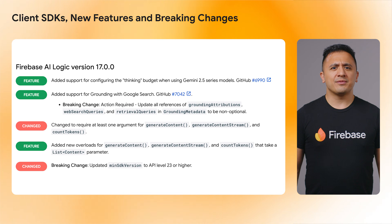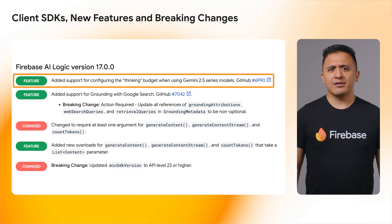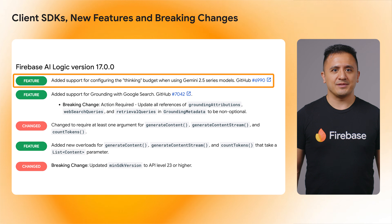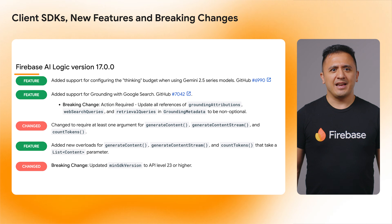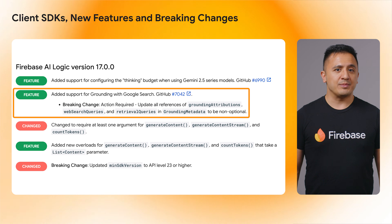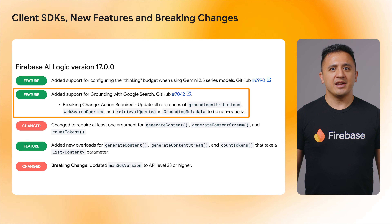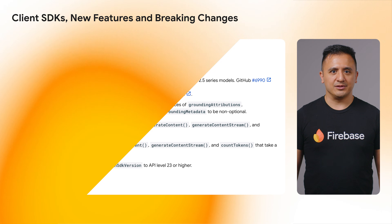With regards to Firebase AI Logic, support for configuring the thinking budget when using Gemini 2.5 series models has been added, and as part of adding support for grounding with Google Search, all references of grounding attributions, web search queries, and retrieval queries in grounding metadata are now non-optional.